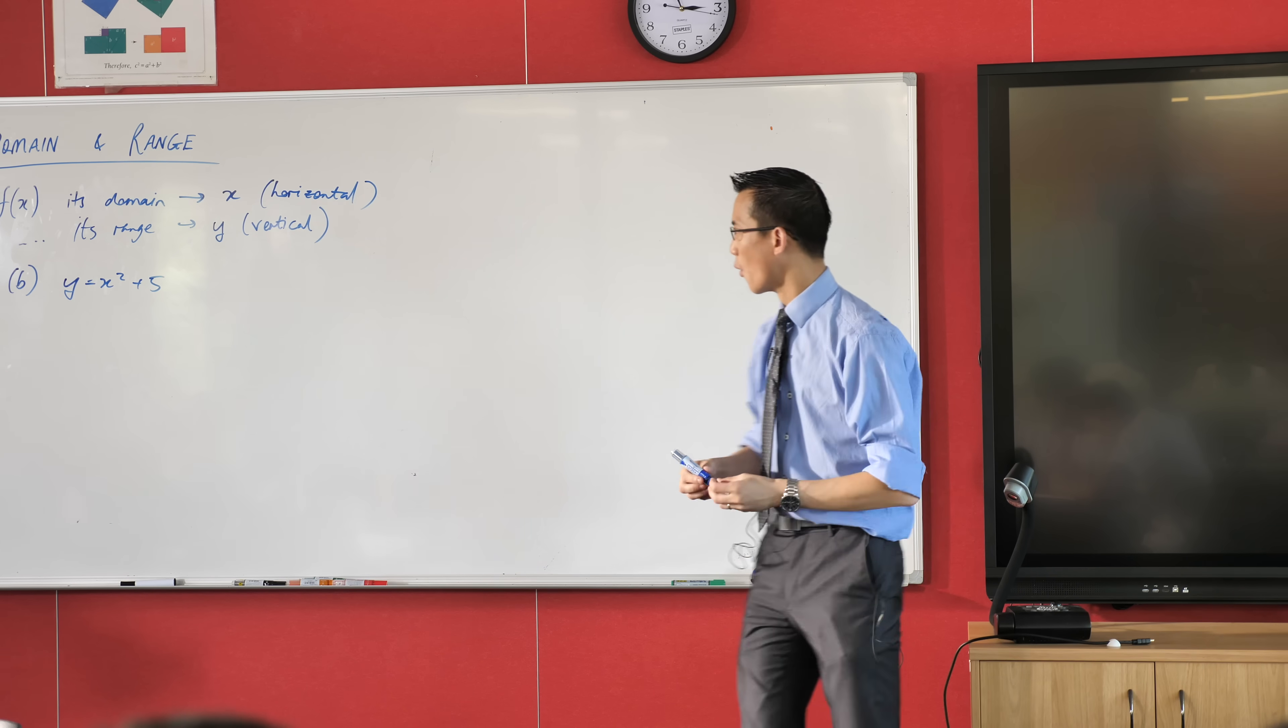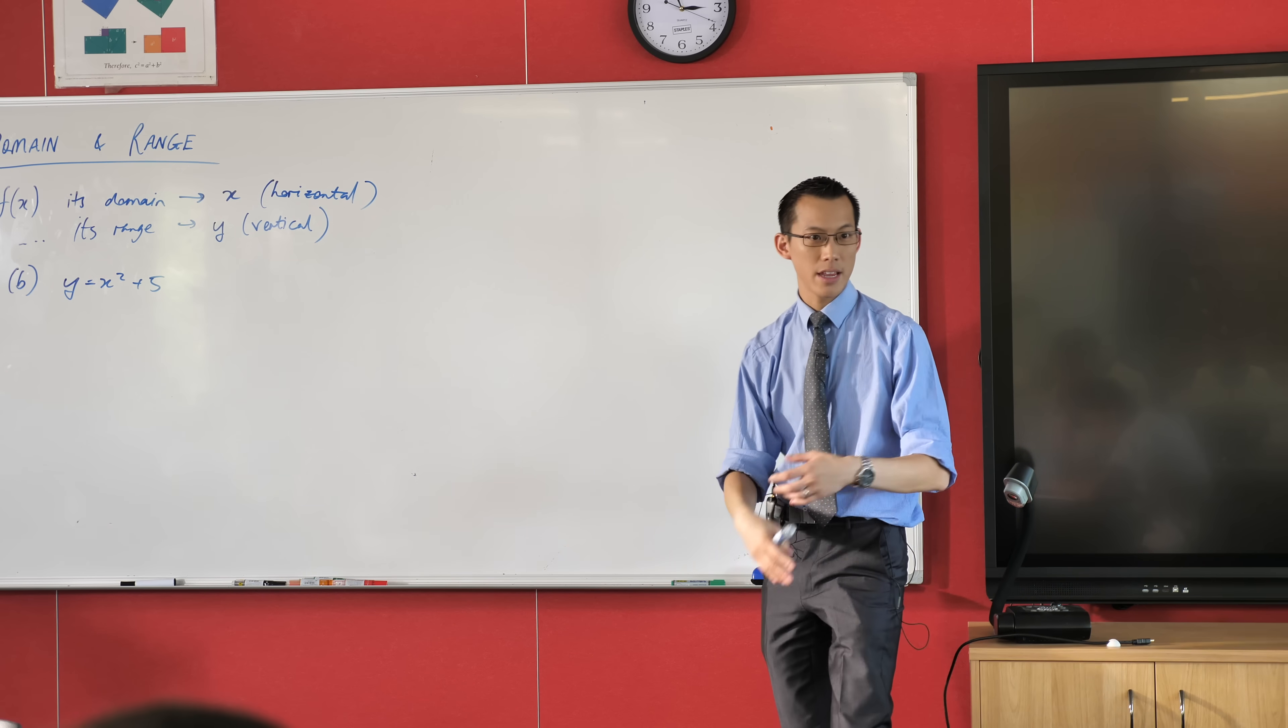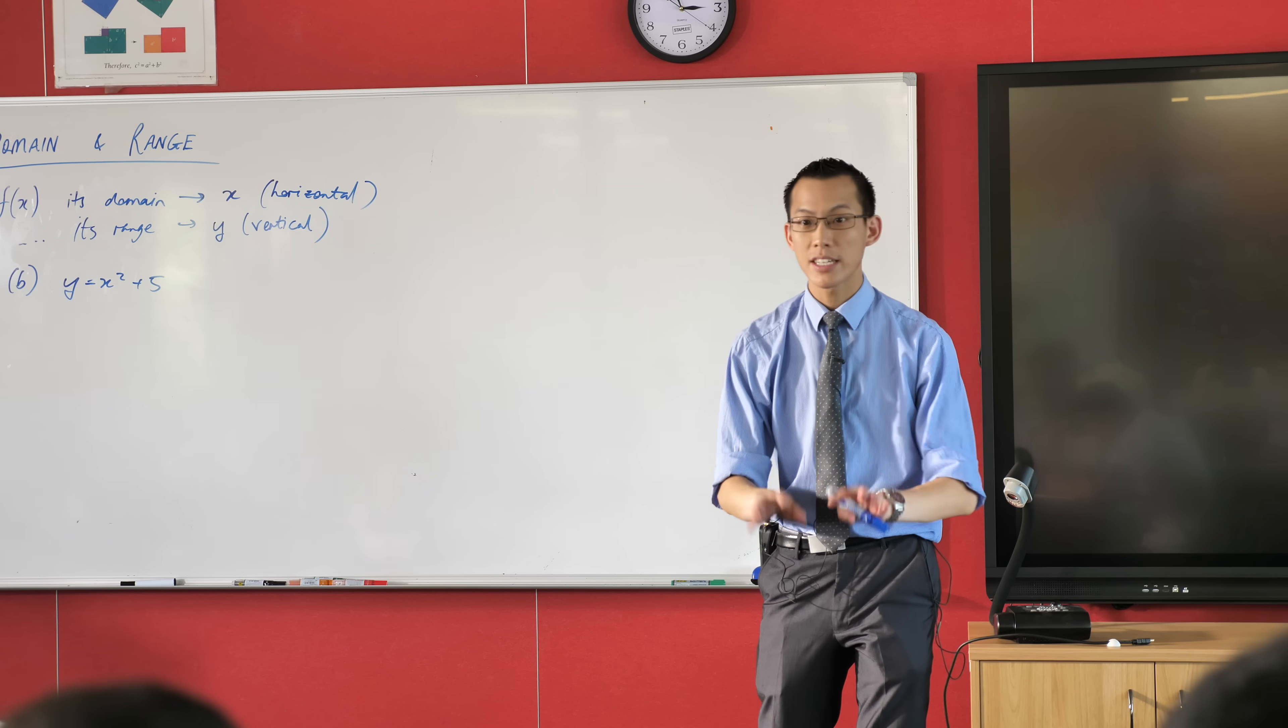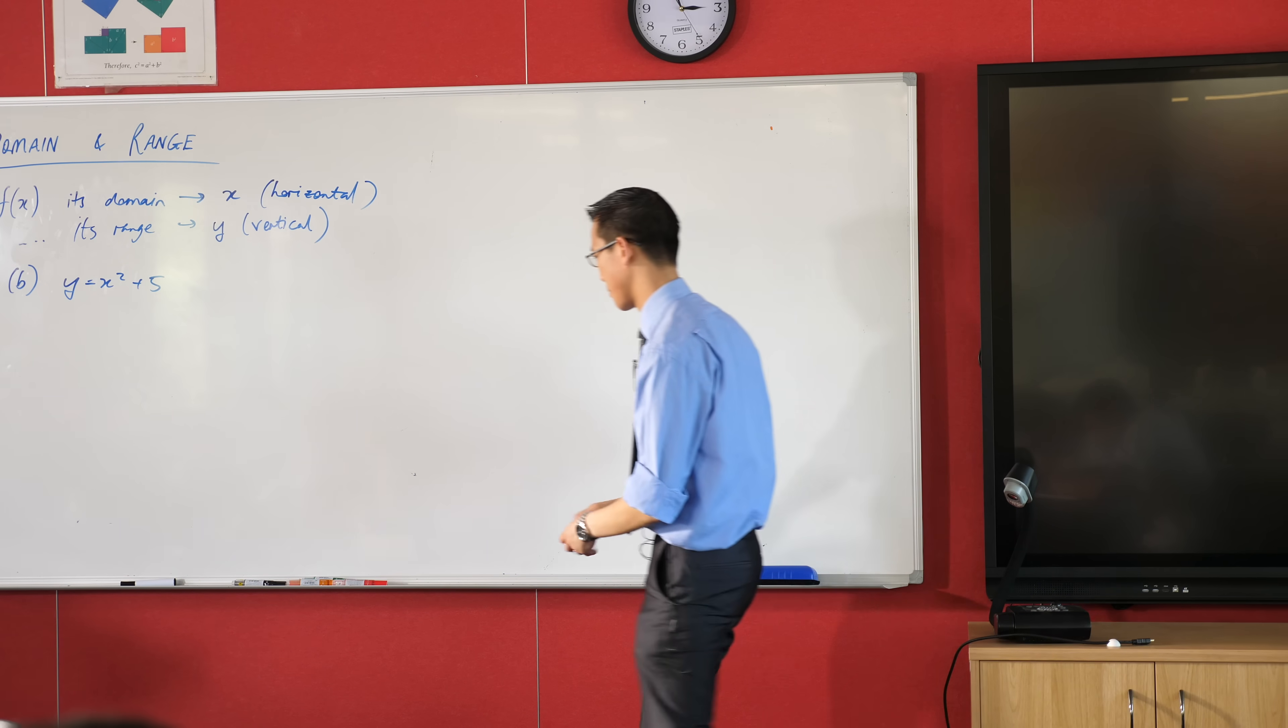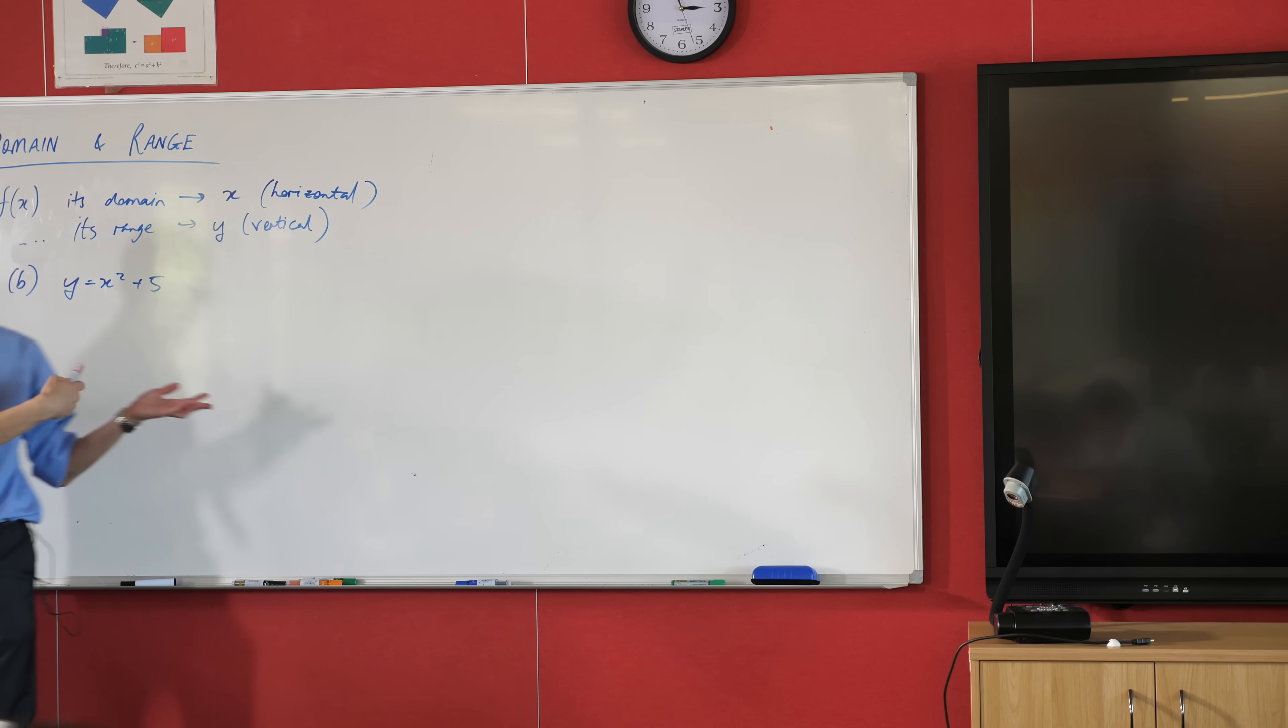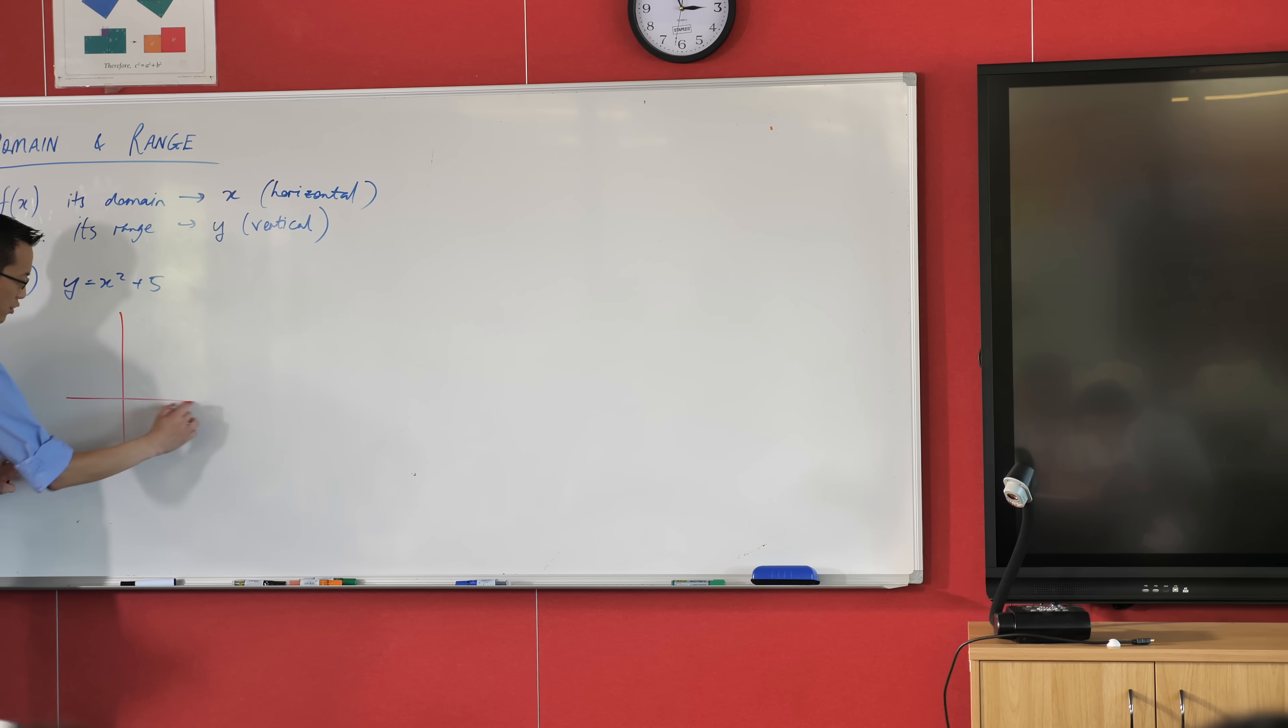Now the easiest way to work out where are the domain and range going to be is just draw a picture. It doesn't have to be beautiful, but the picture will help us answer this question easily. So underneath where you're writing the function, just draw a really small set of axes for me. It doesn't have to be beautiful, just enough so we can actually put some stuff on it. So here's my set of axes.